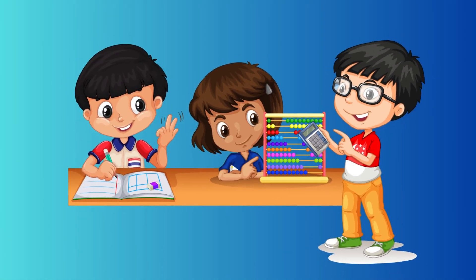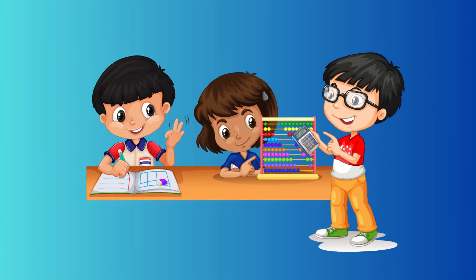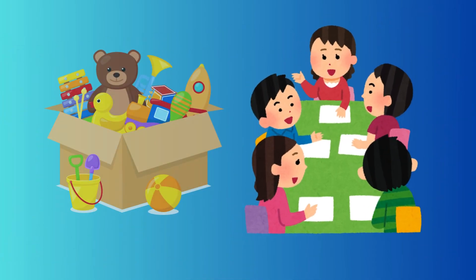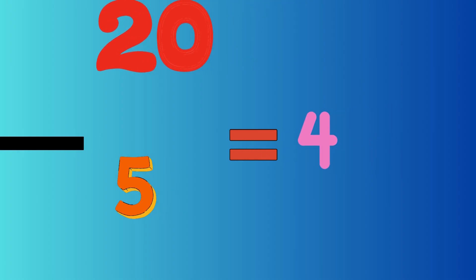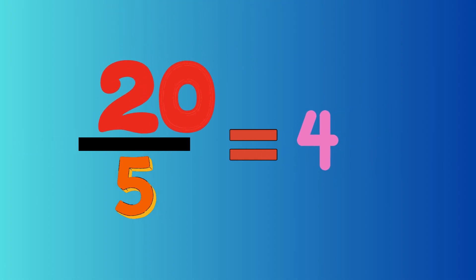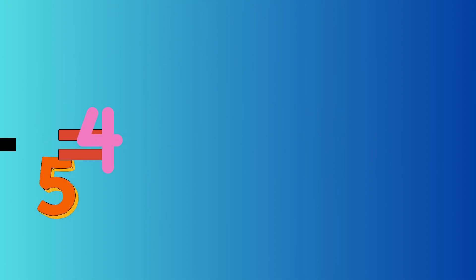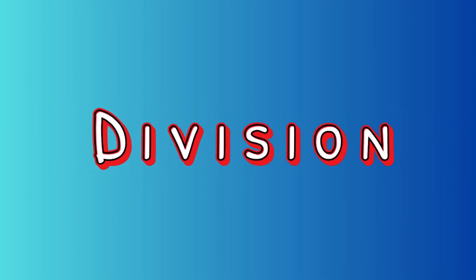Division's cool, it's not so tough. Just break things down, no need to bluff. Like twenty toys and five best pals, each gets four, go tell your gals! Write the big one, draw the line, see how many fit in just fine!